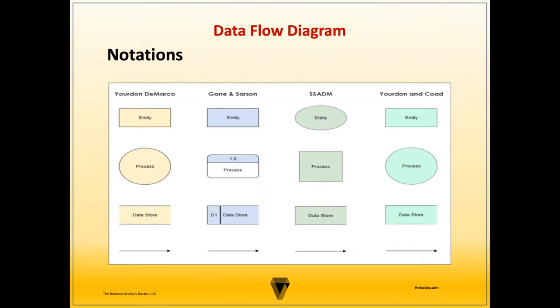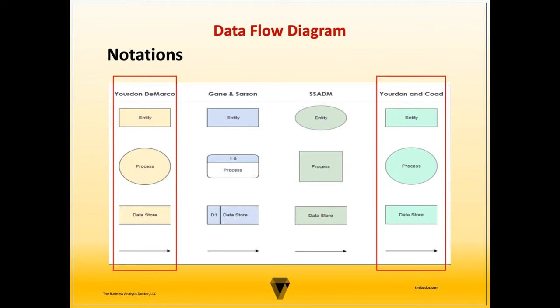Let's look at some of the common notations of a data flow diagram. First, we have the Yourdon and DeMarco and the Yourdon and Coad notations. Both represent entities as rectangles, processes as ovals or circles, and data flows as lines with arrowheads. However, the data stores differ: Yourdon and DeMarco represents the data store as two parallel horizontal lines, while Yourdon and Coad represents it as a rectangle with the right side open.